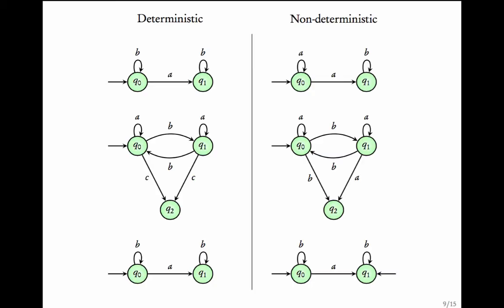Let me give examples of deterministic and non-deterministic transition systems. Look at this first transition system: at q0 on action 'a', it can either stay or go to another state — so this is non-deterministic. In the second transition system there is a single initial state, and at q0 on 'a' and 'b', and at q1 on 'b', each has a unique transition — so it is deterministic. In another example, at q0 on 'b' there are multiple transitions, making it non-deterministic.